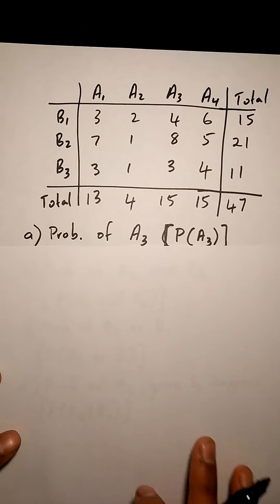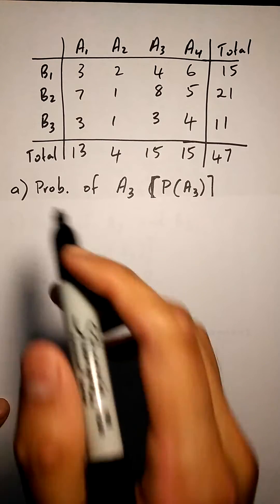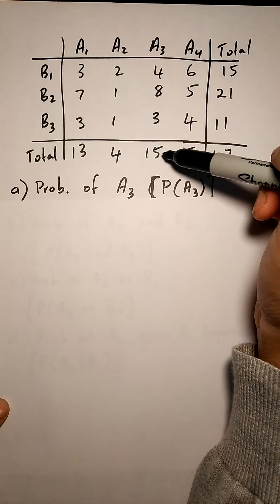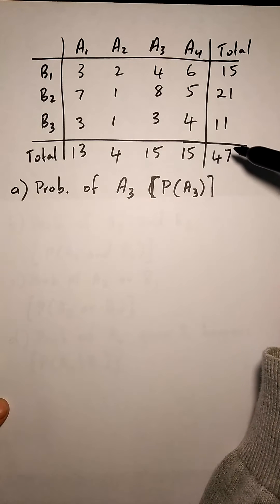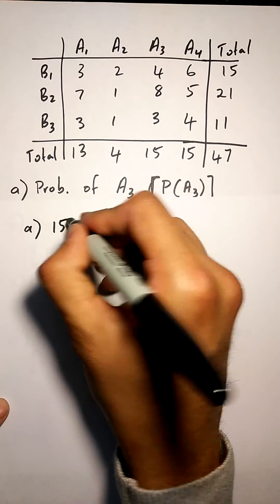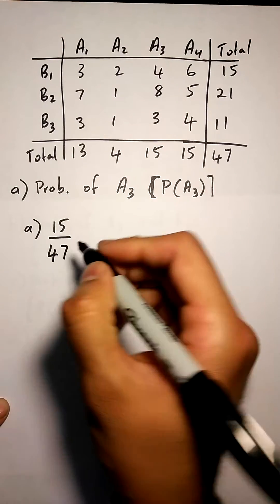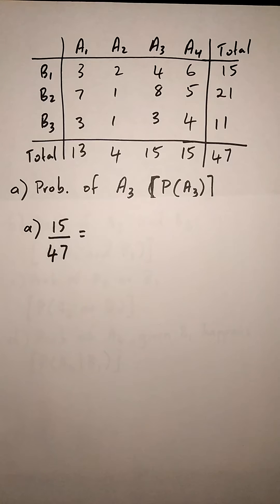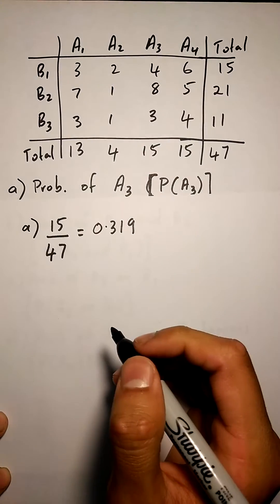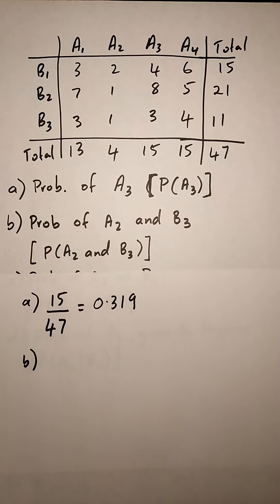Anytime they're asking us to find a single thing, all we do is look for A3. We know A3 is over there. We always look at the total and divide by the absolute total. The solution to part a would be 15, the total of A3, divided by 47.